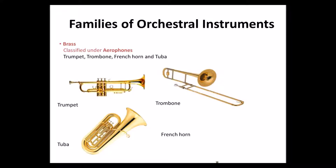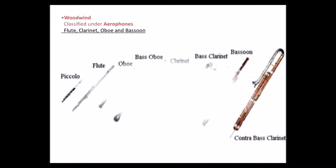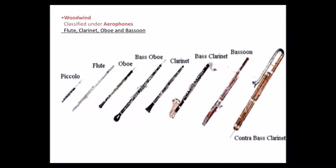And finally the French horn. The next group is the woodwinds, also classified under aerophones. We have the flute, the clarinet, the oboe, and the bassoon. For the different sounds, I've chosen only a few from this group — the flute sounds like this, then we have the oboe, the clarinet, and finally the bassoon.